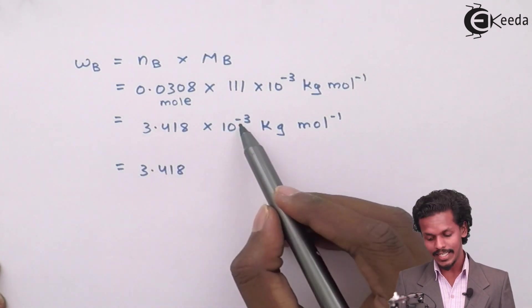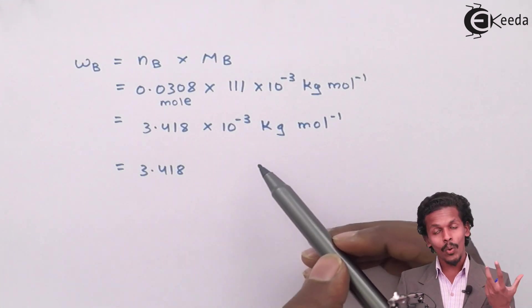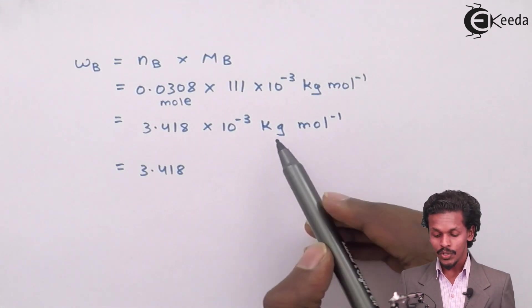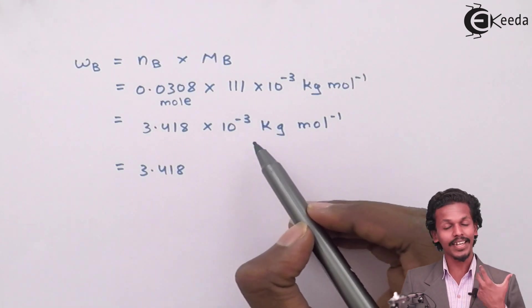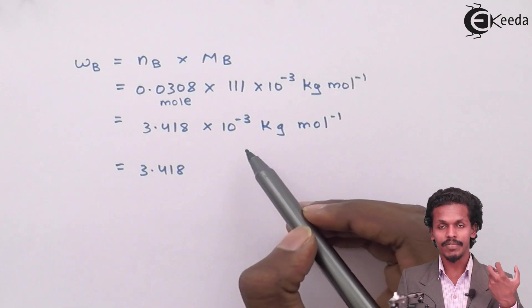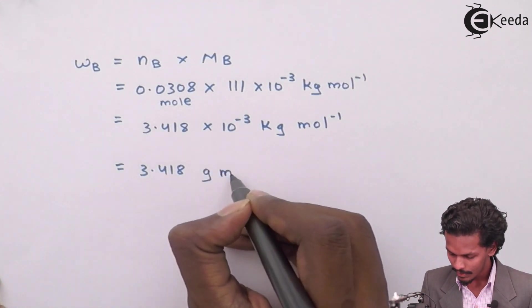I can convert this into gram also. This 10 raised to minus 3 will cancel out K because K is nothing but kilos and K has a value of 10 raised to 3. So this 10 raised to 3 and this 10 raised to minus 3 will cancel out each other. And the remaining unit which is left with us right now is 3.418 gram.